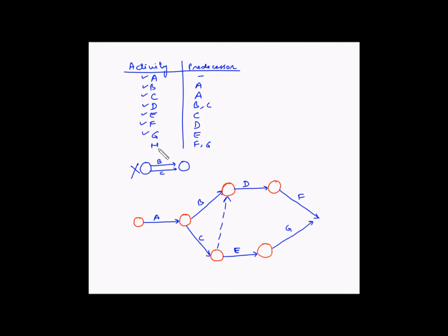Next activity is H which is dependent on both F and G. So we can draw the ending node here for both F and G, and H will emerge from this. And this will end in the finish node.